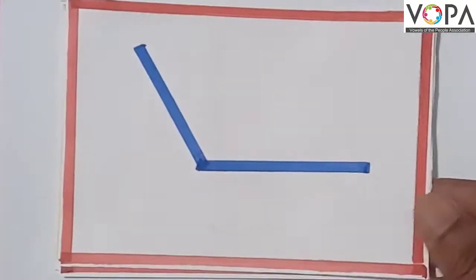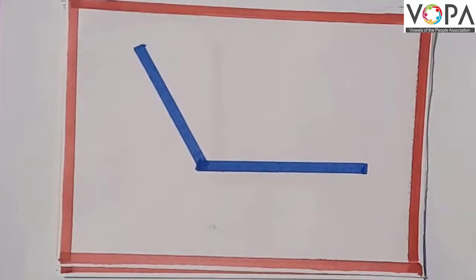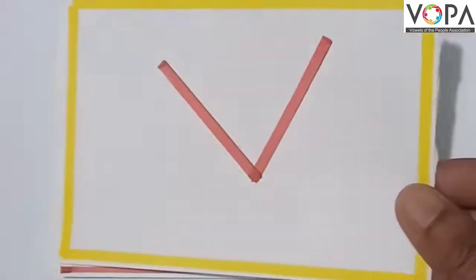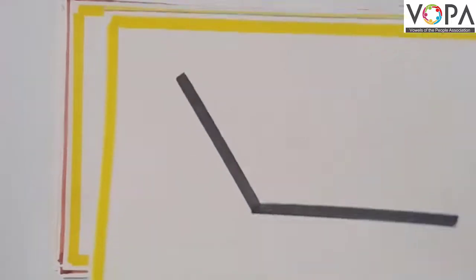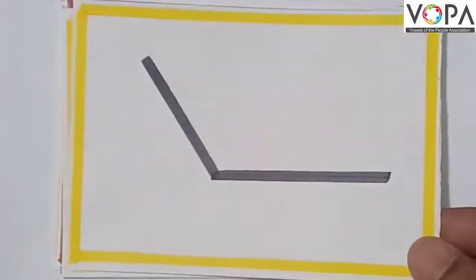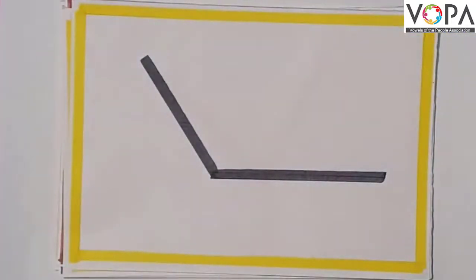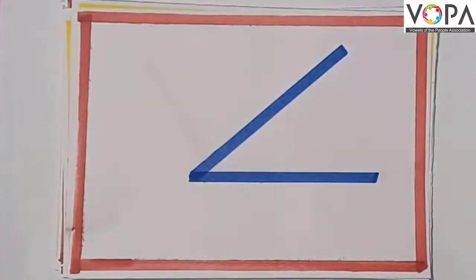Look at this angle — this is an obtuse angle. Very nice. Look at this angle — this is an acute angle. Very good. Now look at this angle — this is an obtuse angle. Very good. Now look at this angle — this is an acute angle.